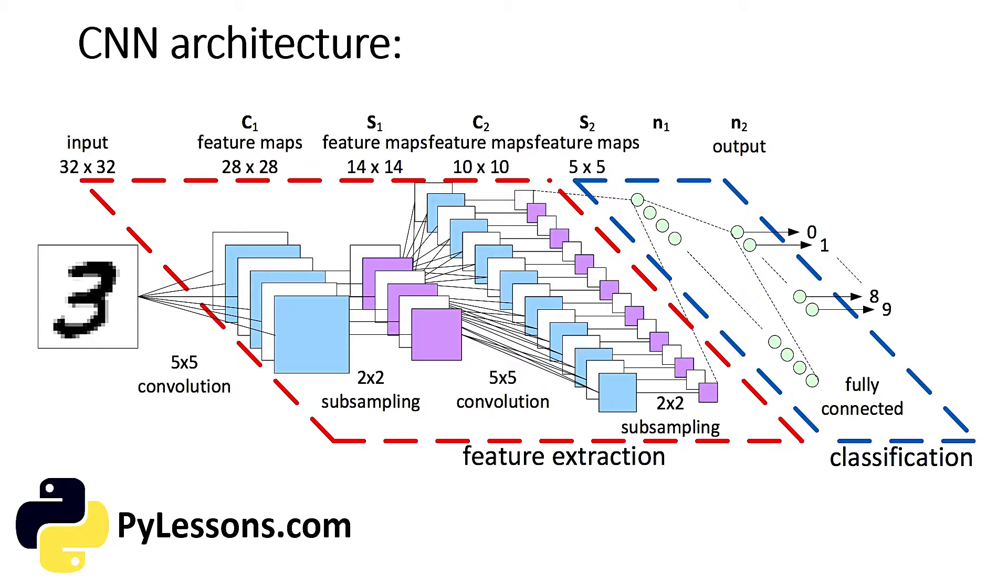The other part is classification. Here is the fully connected layer that will serve as a classifier on top of the extracted features. They will assign a probability for the object on the image being what the algorithm predicts it is. There are squares and lines inside the red dotted region which we will break down later in this tutorial. The green circles inside the blue dotted region named classification is the neural network or multi-layer perceptron which acts as classifier. The input to this network comes from the preceding part named feature extraction.